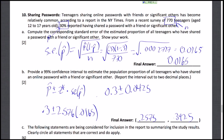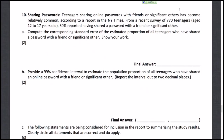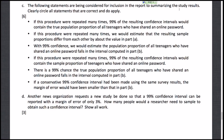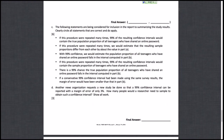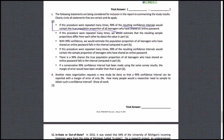Let's go to the next part, which has statements that may or may not be true. The following statements are being considered for inclusion in a report summarizing the study results. The first one: if this procedure were repeated many times, 99% of the resulting confidence intervals would contain the true population proportion of all teenagers who have shared an online password. This is correct — this is exactly how you interpret a confidence level.